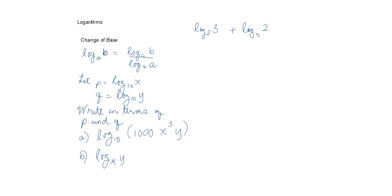Let's take a look at this problem where p equals log base 10 of x and q equals log base 10 of y. We have to write all the answers here, a and b, in terms of p and q. We'll take a look at the first example: log base 10 of 1000x³y.